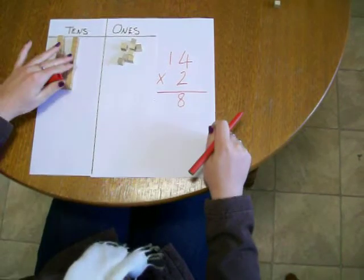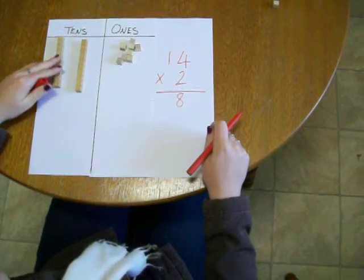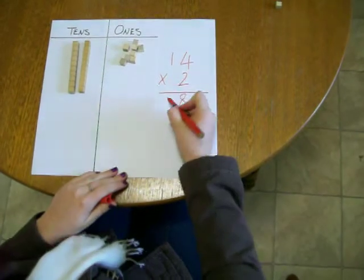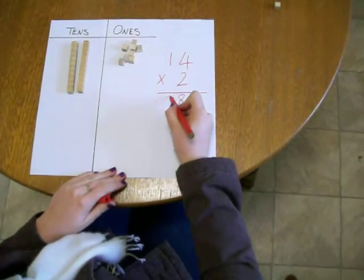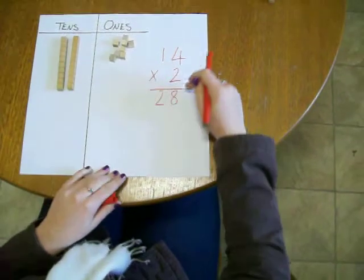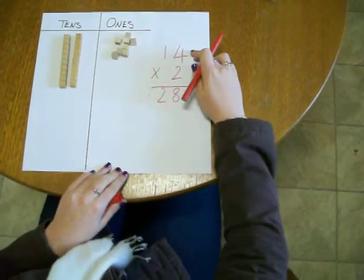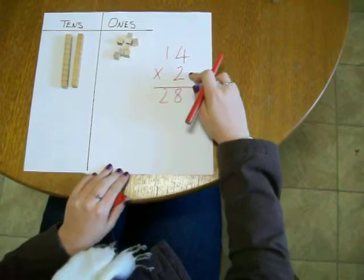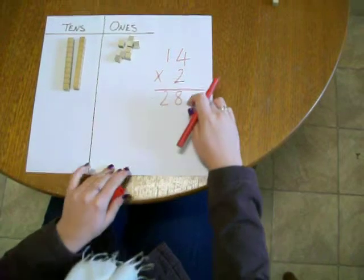And 1, 2 tens. So we write that in the 10's column. And our answer to 14 multiplied by 2 is 28.